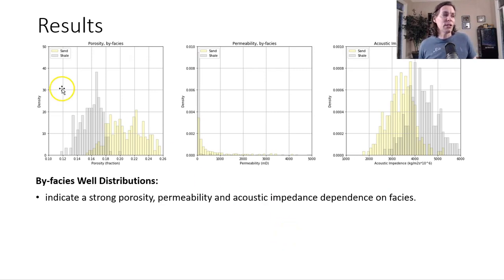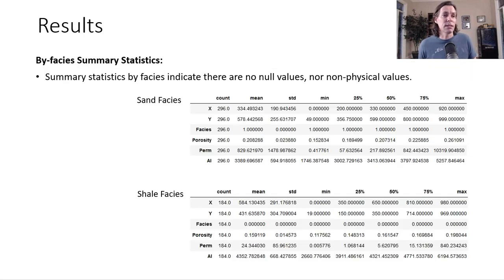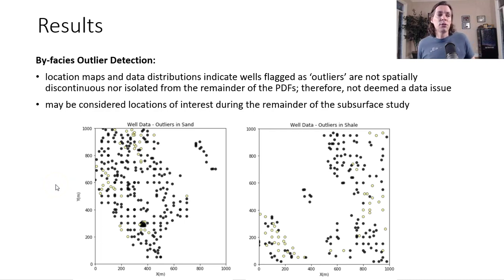Looking at the bifacies property distributions — porosity, permeability, and acoustic impedance — you can see that by shale and sand there is a significant difference. The multimodal behavior you see when you don't consider them separately is definitely being driven by facies. There is clearly a strong porosity, permeability, and acoustic impedance dependence on facies. You can confirm this by looking at the summary statistics by sand and by shale — the means, minimums, P25s, and so forth are all quite significantly different.